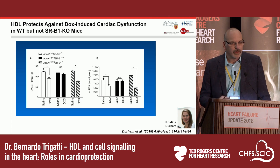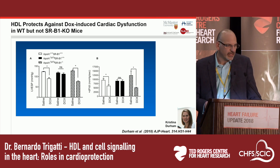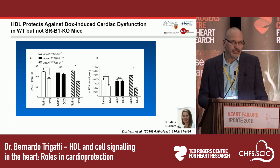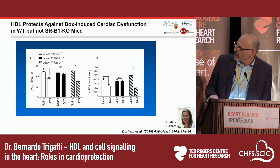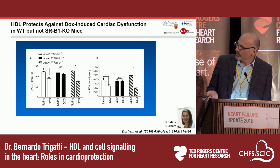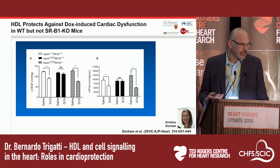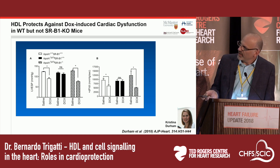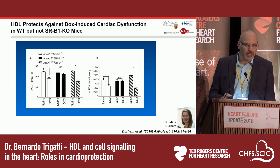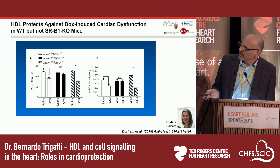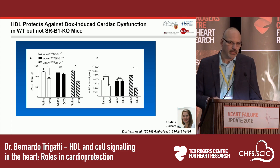With the help of Mansour Hussain's lab here in Toronto, she looked at left ventricular function in these mice and saw that, as expected, doxorubicin treatment reduced left ventricular function in wild-type mice, and that overexpression of APOA1 prevented this doxorubicin-induced left ventricular dysfunction. But this protection was lost in the SRB1 knockout mice.